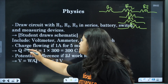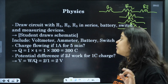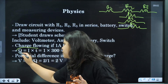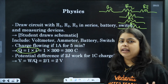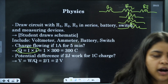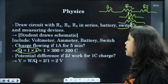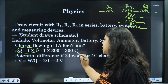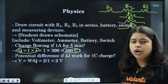What is the charge flowing if 1 ampere for 5 minutes? Using the formula Q = I × t: Q = 1 × 300 = 300 coulombs.